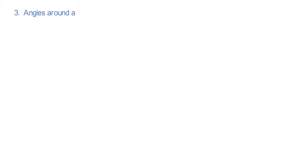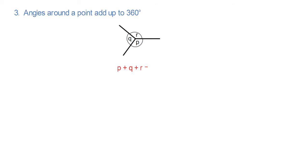Point 3. Angles around a point add up to 360 degrees. In this diagram, P add Q add R equals 360 degrees.